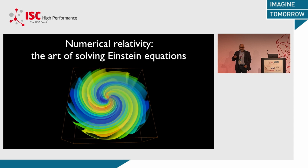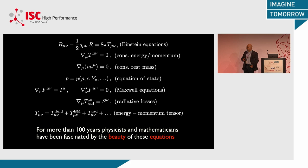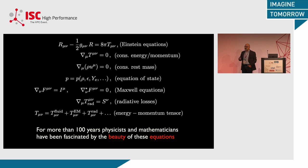For those of you who enjoy seeing equations, these are the equations we need to solve. These are a set of covariant tensor equations. On top we have Einstein's equations, and we have equations related to magneto-hydrodynamics, and other equations that may have to do with neutrinos and radiation. All of these equations have mathematical properties that have fascinated physicists and mathematicians alike for the last hundred years. They are considered one of the most beautiful mathematical equations we know in physics.